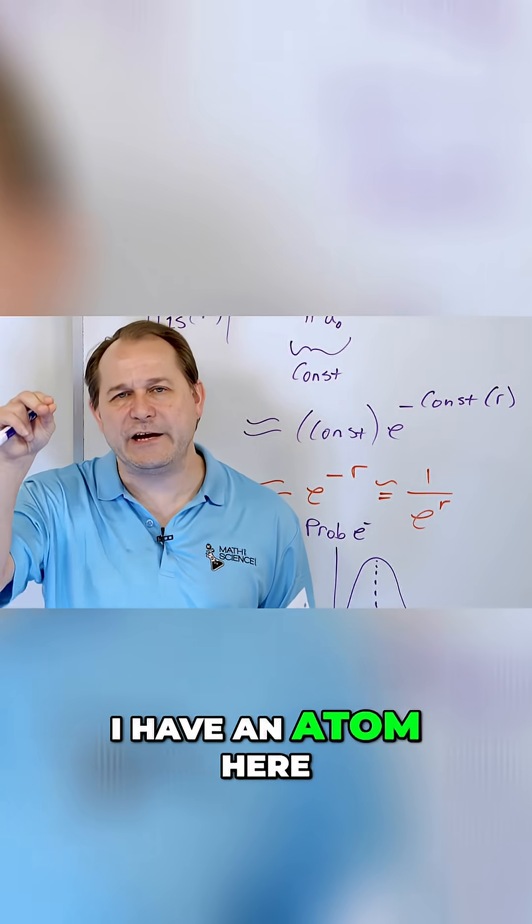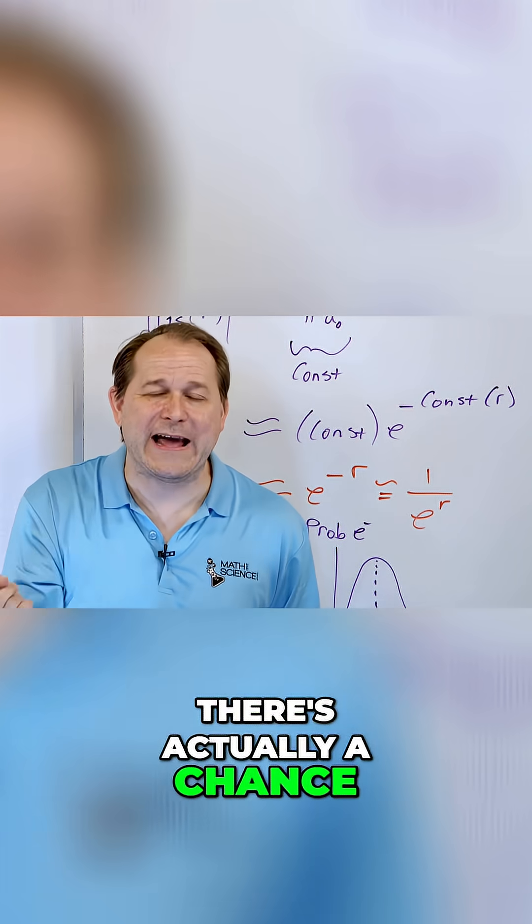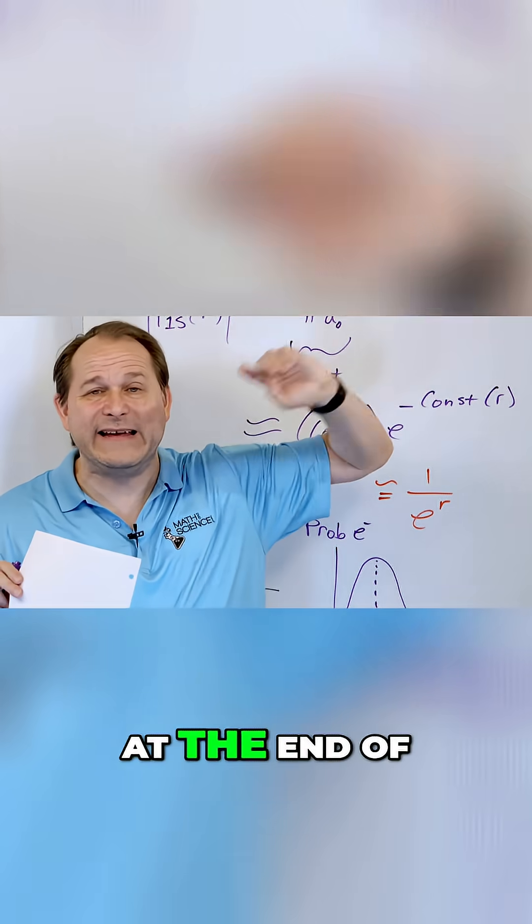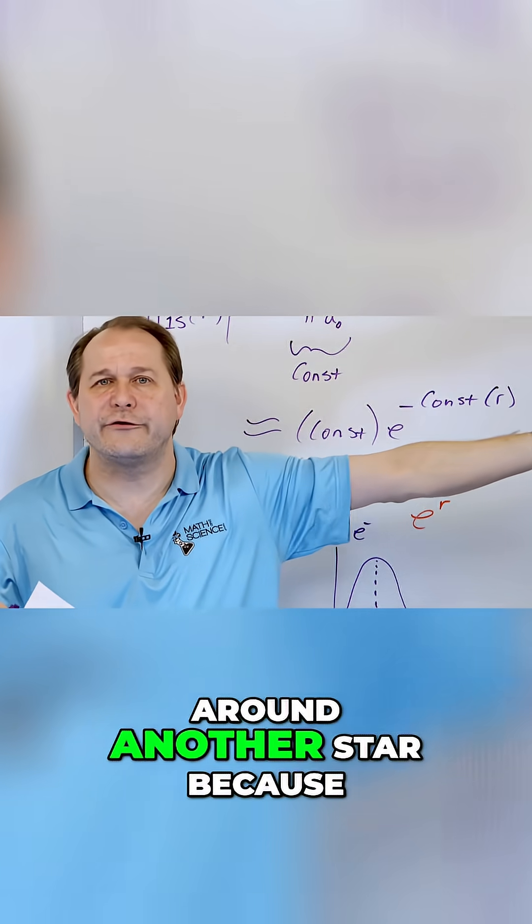That means that if I have an atom here, there's actually a chance that the electron around this atom is not here, but over at the end of the solar system or around another star.